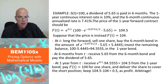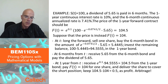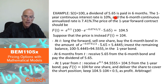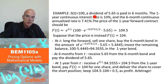We also know that the one-year continuously compounded interest rate is 10% — this is very high for today's market environment, but let's say it's 10%. And we also know the six-month continuous annualized rate is 7.41%.